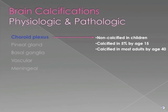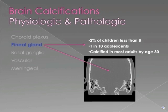The choroid plexus is not normally calcified in children, and it is only calcified in about 5% of adolescents, while most adults will have choroid plexus calcifications by the age of 40. In the pineal gland, only 2% of children less than 8 will show calcifications, 1 in 10 adolescents will demonstrate calcifications, and by age 30, nearly every adult has calcifications in their pineal gland.